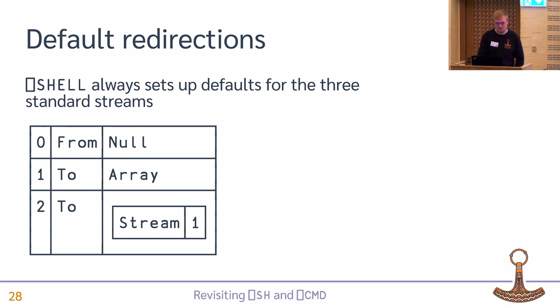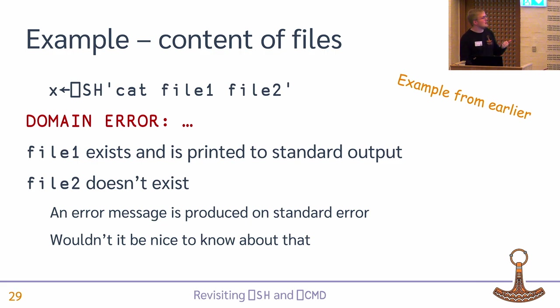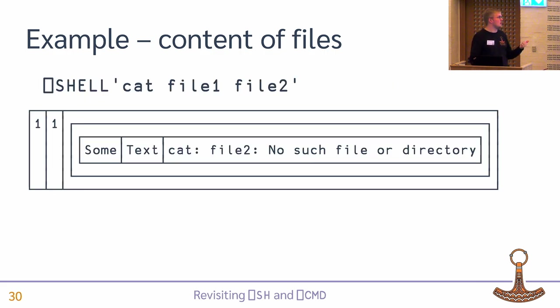Quad-Shell will always set up defaults for the three standard streams. You can specify some of them and the defaults will apply to the rest. The current defaults are: standard input comes from nowhere (no standard input), standard output is collected as a nested character vector one per line, and standard error is sent to standard output so it's collected together with that.